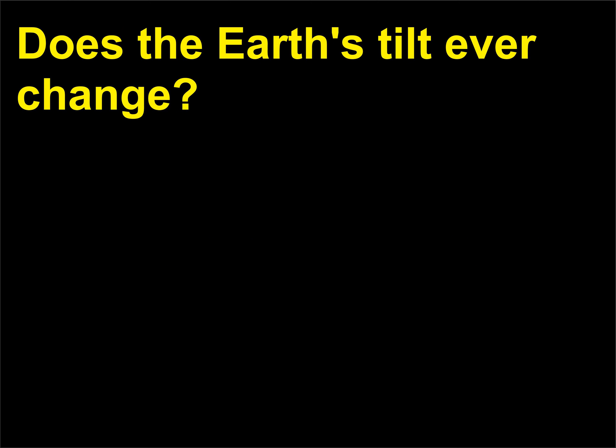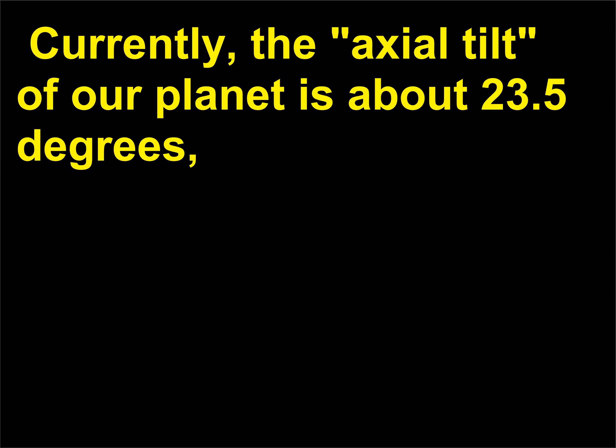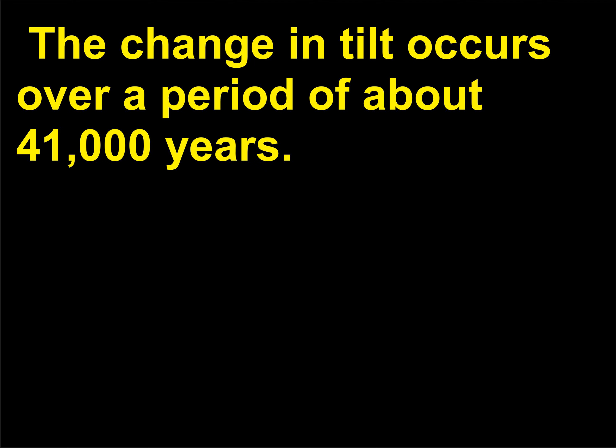Does the Earth's tilt ever change? Yes. Our planet actually wobbles a bit, like a spinning top running out of steam. Currently, the axial tilt of our planet is about 23.5 degrees, which is somewhere in the middle of its total capable range of 22.1 to 24.5 degrees. The change in tilt occurs over a period of about 41,000 years.